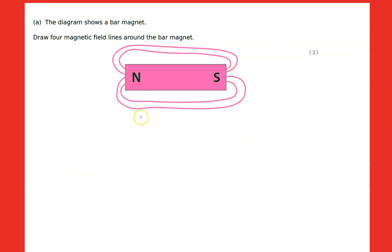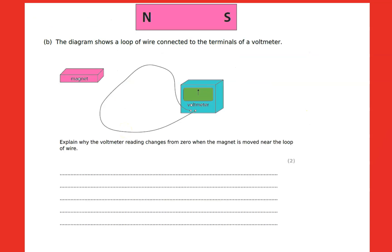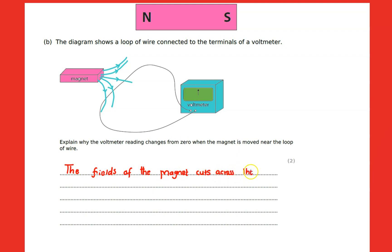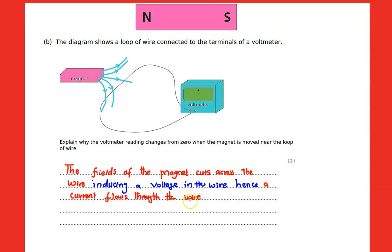You have to indicate the direction of the fields on the diagram. Voltage is induced in the conductor, and the amount of voltage induced depends on the strength of the magnet, the number of turns, and the speed at which the magnet is moved close to the conductor.